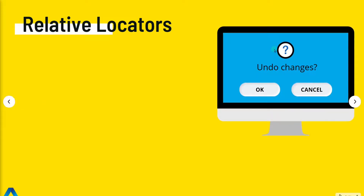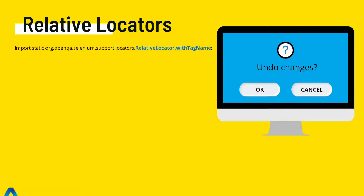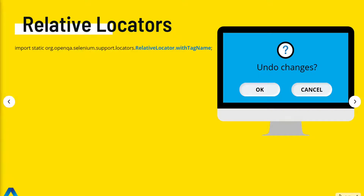Here we have an example application which has an image with a question mark, some text, and two buttons. The first thing we do is import the withTagName method from the RelativeLocator class. Now let's say we want to locate the image. We first find the text the old way by calling driver.findElement and giving the ID for that text. Then to locate the image, we call driver.findElement and use the new withTagName method, passing in the HTML tag.